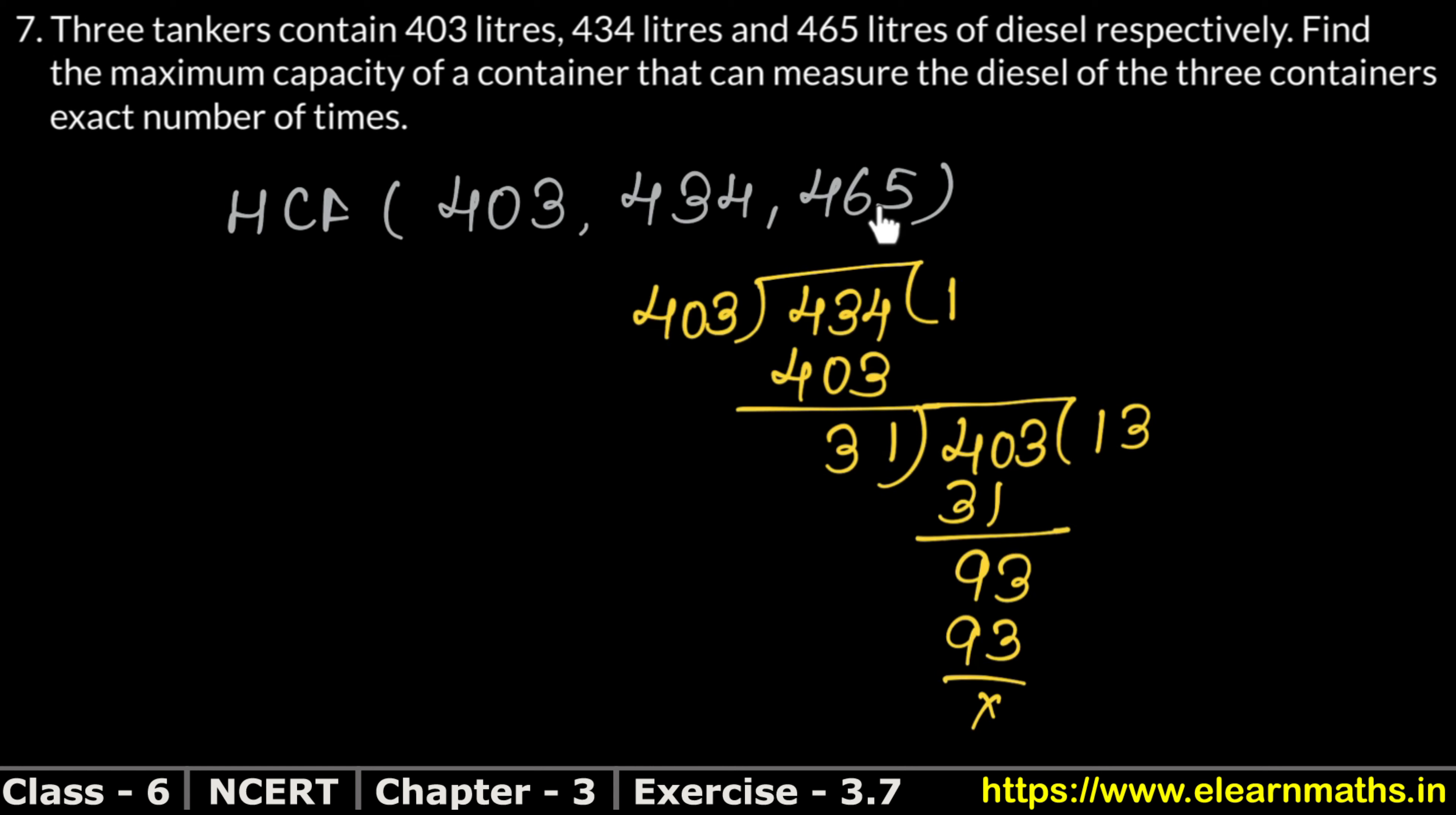Now we divide 465 by 31. How many times? 5 times 31 is 155. Exactly divisible, so how much is our HCF?